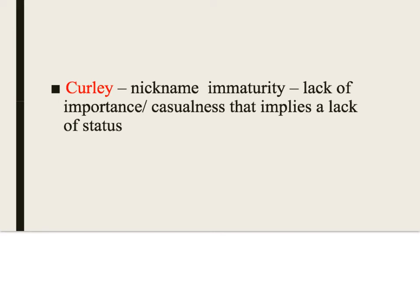The first thing Steinbeck does to present Curly is through his nickname. Curly is not his real name — it's a nickname probably given in his youth, and the fact that he hasn't grown out of it links him to a level of immaturity. It's an epithet — a descriptive name or phrase given as a substitute for a real name.